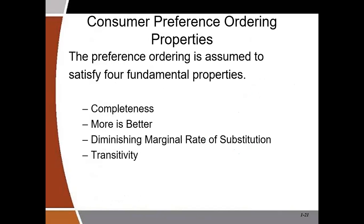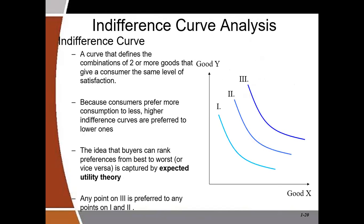This is typically what an indifference curve looks like. The key takeaway from this slide is that indifference curve I is lower than indifference curve II, and indifference curve II is lower than indifference curve III. If you have a bundle on indifference curve III, you'll be more satisfied than on curve II, because the higher the curve — or the further it moves from the origin — the higher the satisfaction. So indifference curve III gives a higher level of satisfaction than II, which gives a higher level than I.